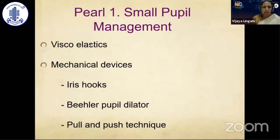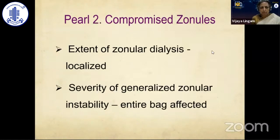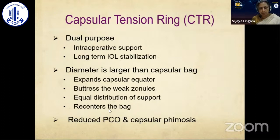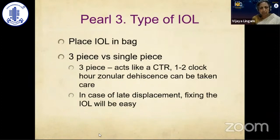For managing small pupils, use a good viscoelastic and mechanical dilation devices such as iris hooks, the Malyugin ring dilator, or the pull-hook technique. For compromised zonules, assess the extent of zonular dialysis and the severity of generalized zonular instability. Depending on the extent of bag compromise, capsular tension rings can be used. The CTR serves a dual purpose: intraoperative support and long-term IOL stabilization. It is larger than the capsular bag, expands the capsular equator, distributes support evenly, re-centers the bag, and can reduce PCO and capsular phimosis over time.